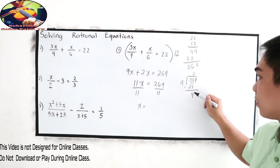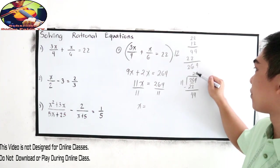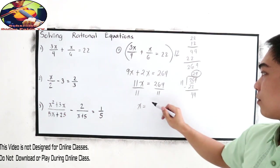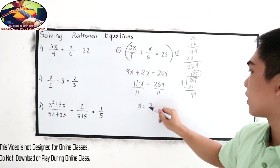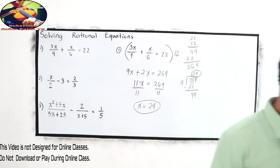So 26 minus 22, 4. Bring down 4. 44 divided by 11, that is 4. So this is 24. Our x is 24.